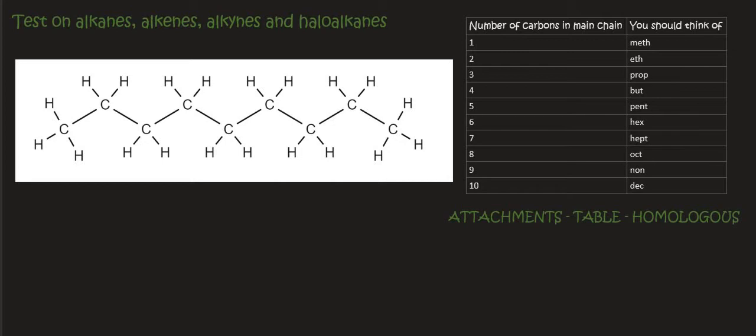Here's the next one. We start with table. We look for the longest continuous carbon chain. This one's nine and so that's going to be non and then it's an alkane, so we add the word ane. We've done the homologous, we've done the table and then there aren't any attachments besides hydrogen and that's normal. So this one is called nonane.